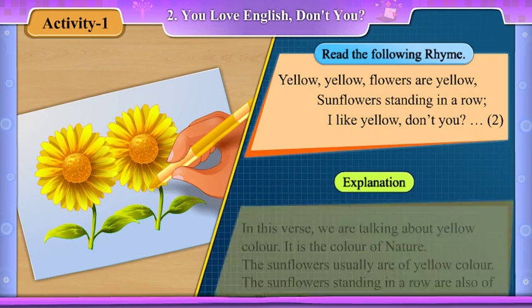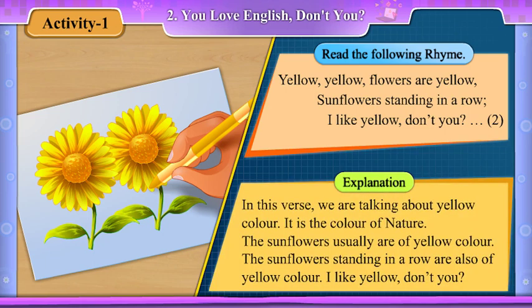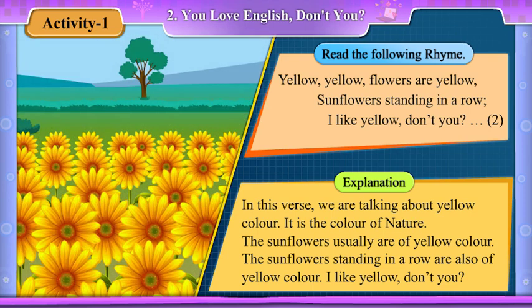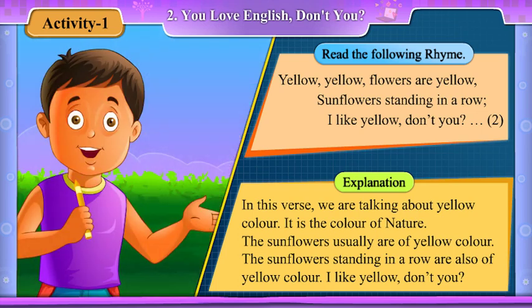Explanation. In this verse, we are talking about yellow colour. It is the colour of nature. The sunflowers usually are of yellow colour. The sunflowers standing in a row are also of yellow colour. I like yellow, don't you?